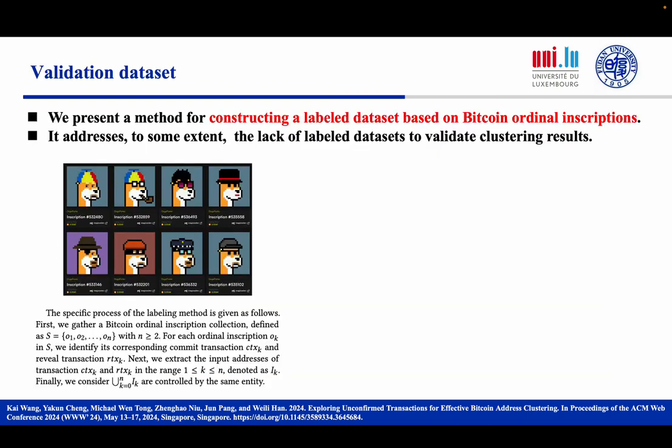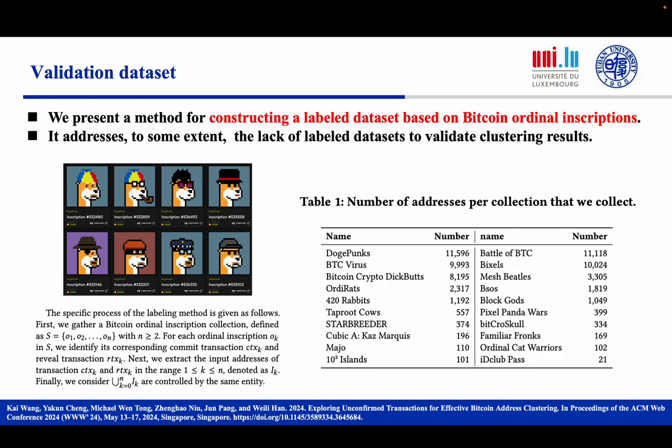We present a method for constructing a labeled dataset based on Bitcoin ordinal inscriptions. This method addresses, to some extent, the critical issue in the field of Bitcoin address clustering — that is, the lack of labeled datasets to validate clustering results. In this paper, we construct and release a labeled dataset encompassing 20 entities and more than 16,000 addresses.